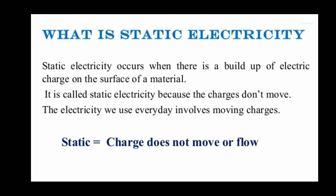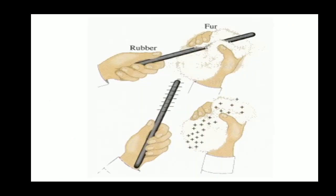We will make the charge to move later. For now, let the charge be at rest. In this diagram, a person is holding fur in one hand and a rubber rod in the other. He moves the rubber rod front and back over the fur. There is friction between the rubber and fur. The person is doing some work, and whenever we do work, we get some amount of energy.